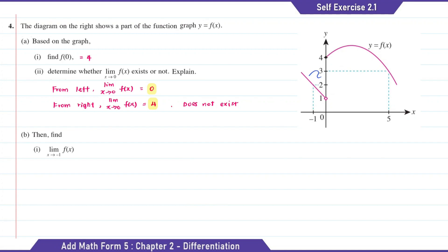So when x approaches 0 from the left-hand side, the function approaches 2. Then the limit value for question number 1 is 2. Number 2: the limit of f(x) when x approaches 5. When x approaches 5 from the left-hand side and from the right-hand side, the function approaches 3. Therefore, the limit value for question number 2 is equal to 3.